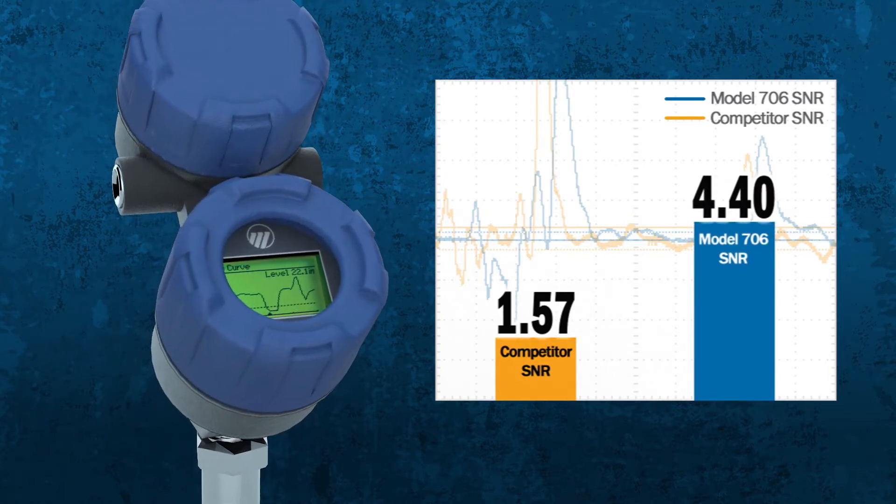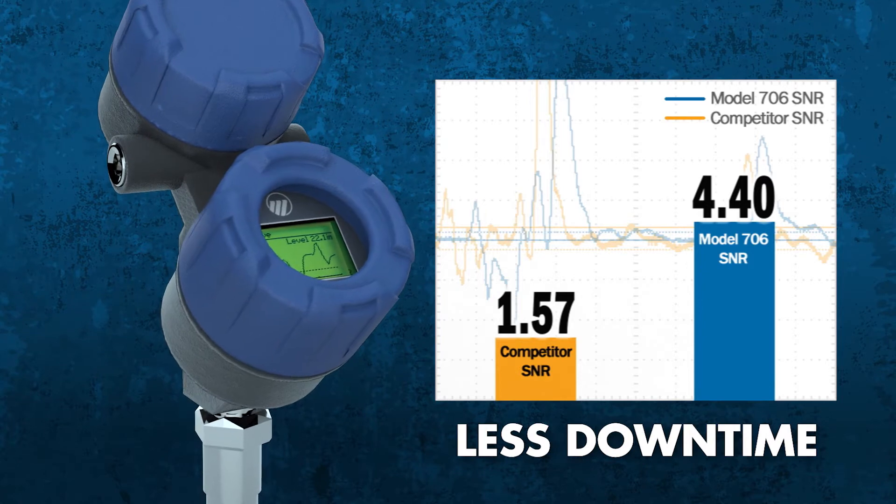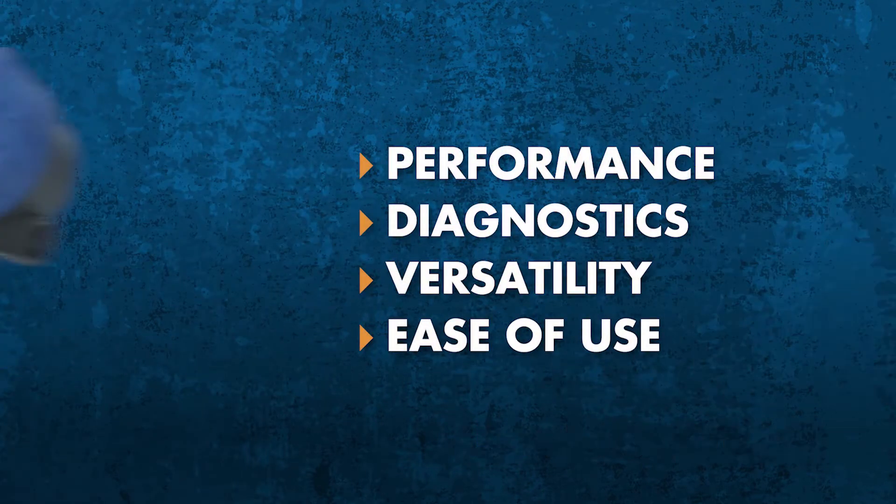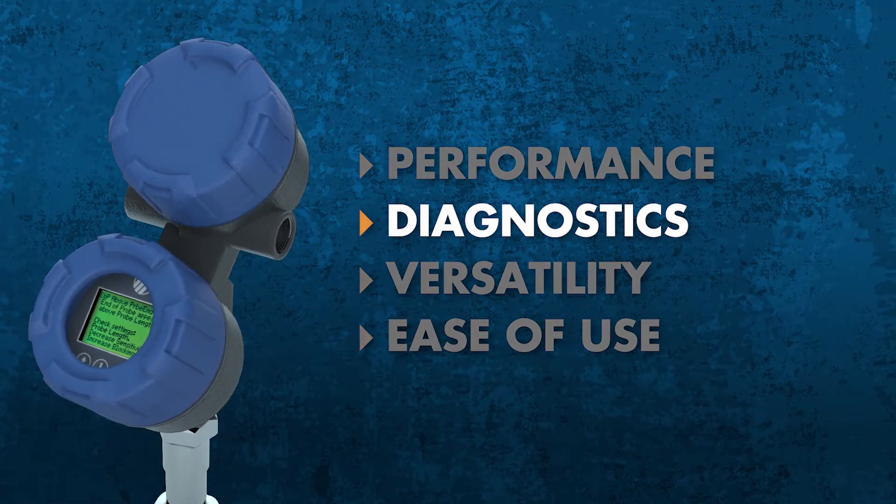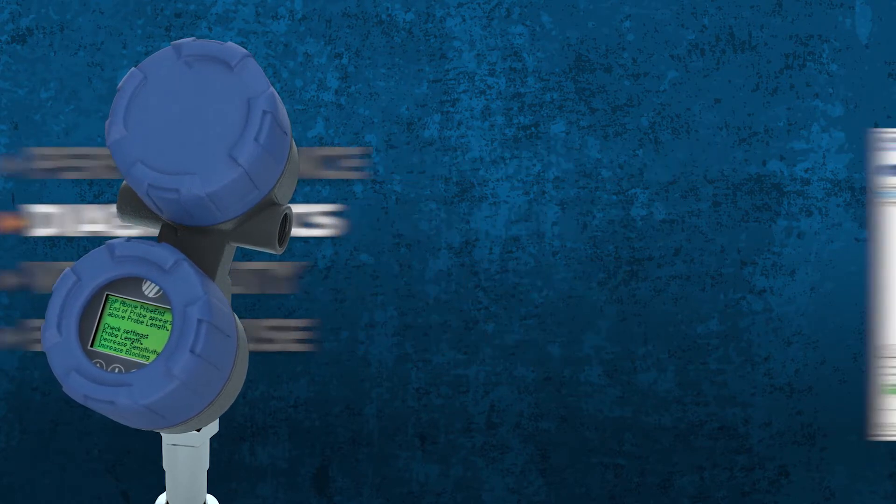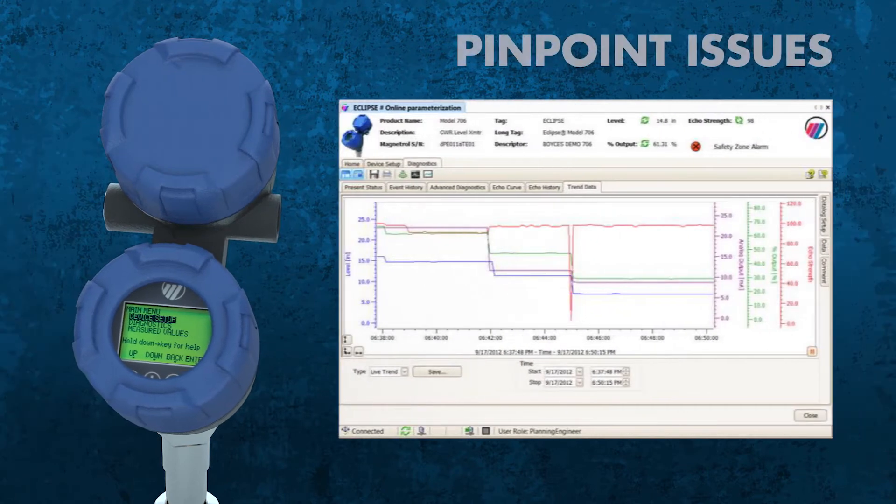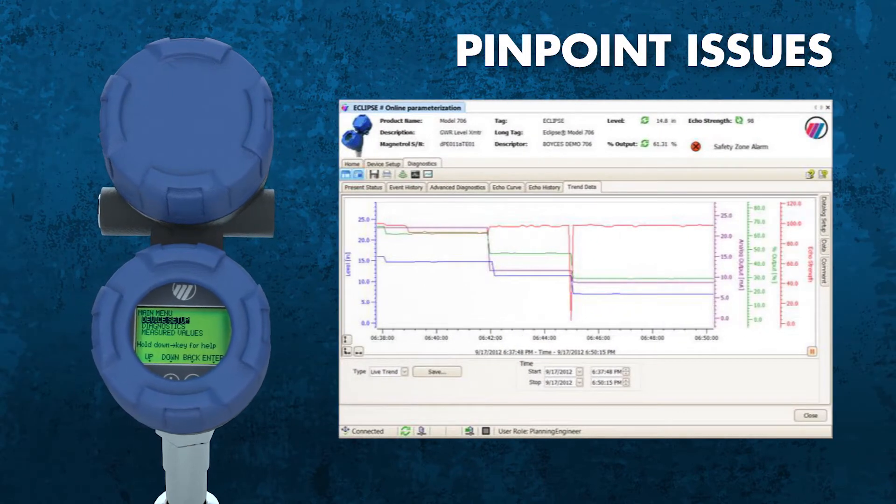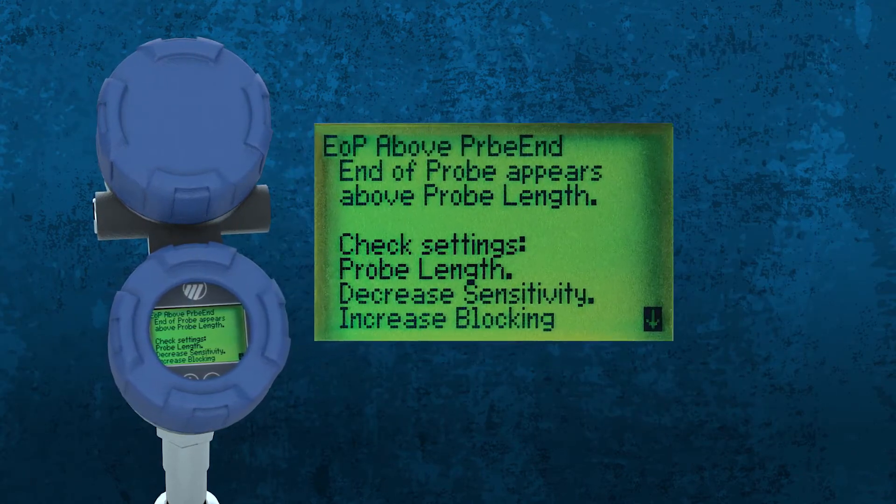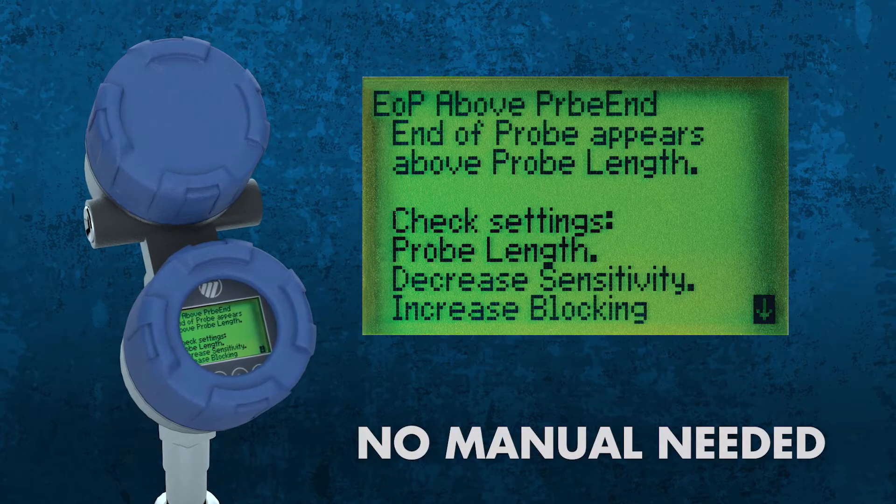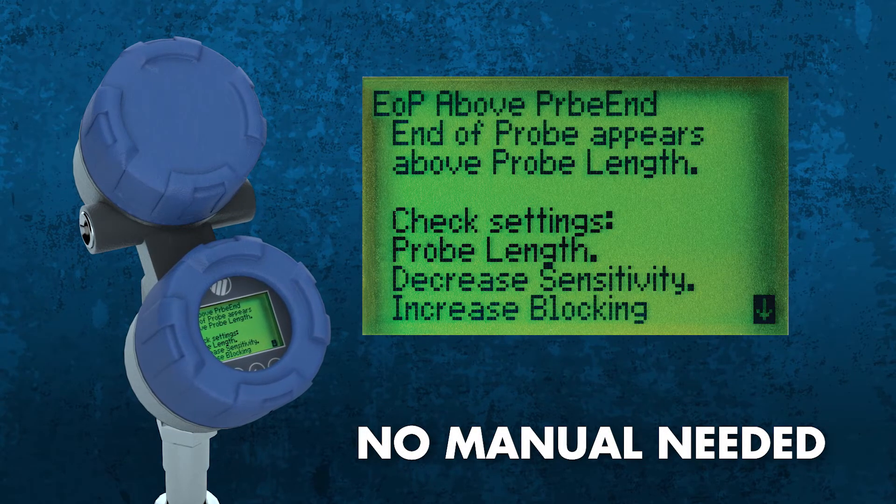Diagnostics are another key factor. The Model 706 puts critical real-time and historical data right at your fingertips, which helps you pinpoint issues when they arise. The LCD display outputs real-time field intelligence—that means no more worrying about where you placed the instruction manual. The troubleshooting tips help reduce costly downtime so you can sleep at night.